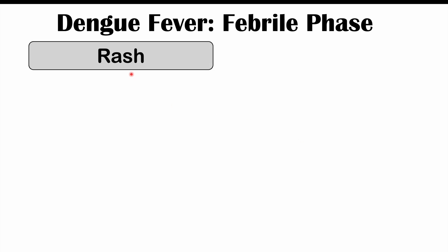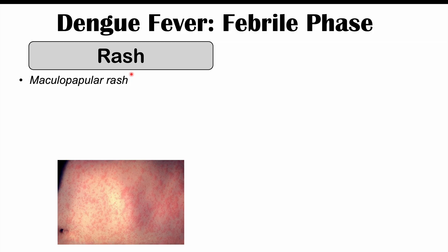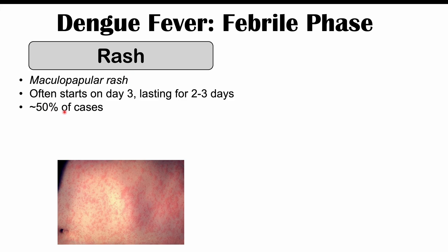We can also see a rash — it's going to be a maculopapular rash, and it often starts on day three of the febrile phase. This rash will last for two to three days. It doesn't happen in everyone; about 50% of cases will have a rash. It's more likely to occur in your first infection — so if you've had dengue fever in the past, you may not have the rash the second or third time.